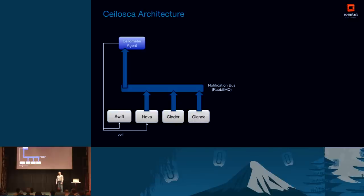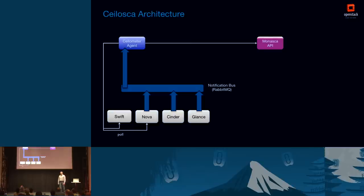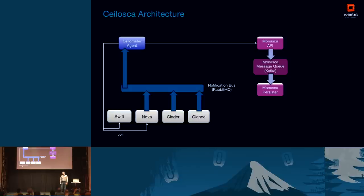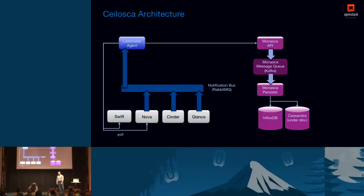SILOSCA is not that different in the sense that it still leverages the same CEILOMETER agents to get notifications and do polling. But then it sends data directly to the MONASCA API. Internally, MONASCA publishes this data into a Kafka-based message queue — and Kafka is way more performant and scales way better than RabbitMQ. A persister component then reads data from the Kafka queue and stores it into the database. The open-source databases available are InfluxDB, with Cassandra under development. There is also an HP-specific option, VerticaDB. For our tests we used InfluxDB, which supports clustering.